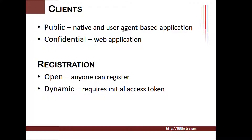The two types are public clients and confidential clients. A client which cannot hold a secret securely is called a public client — usually a JavaScript application or a mobile application. A client which can hold secrets securely is called a confidential client — usually a web application that can store secrets on the backend server securely.